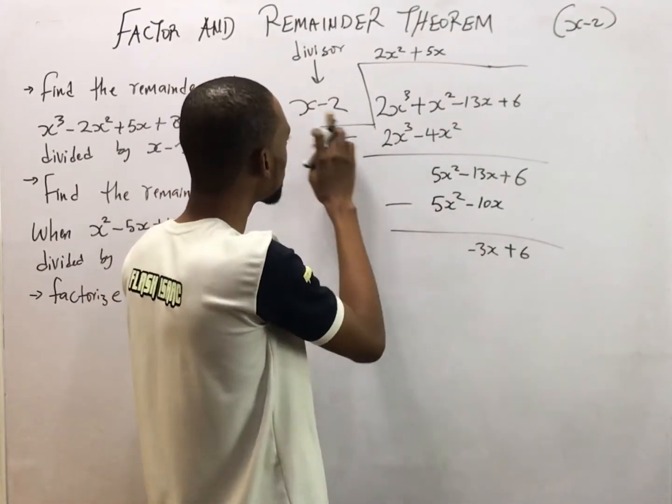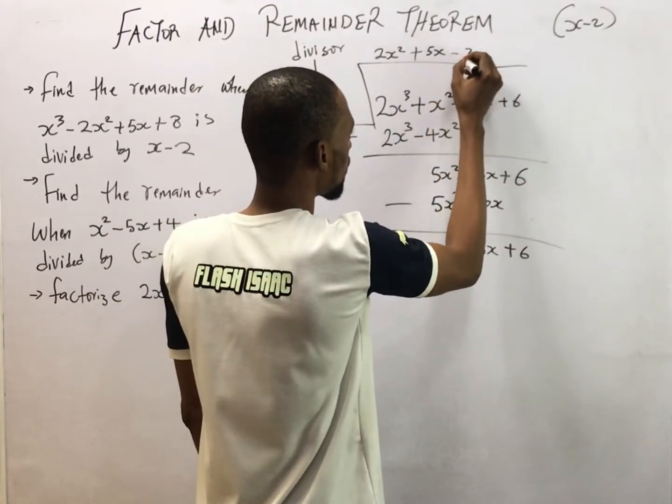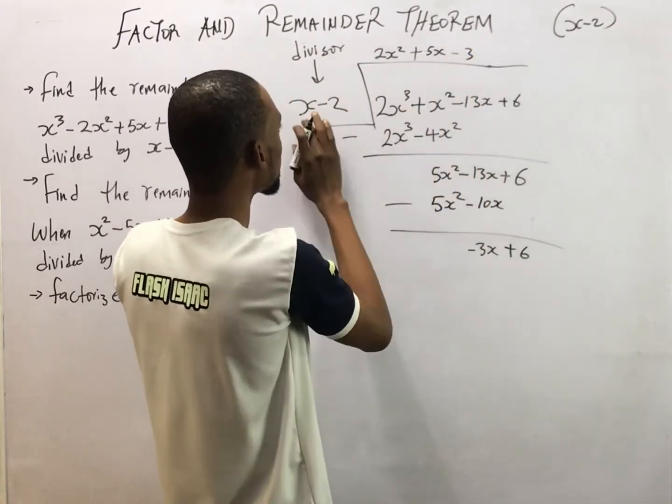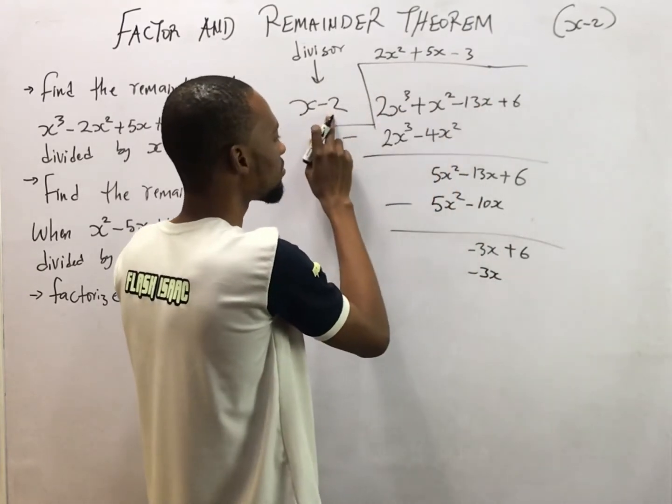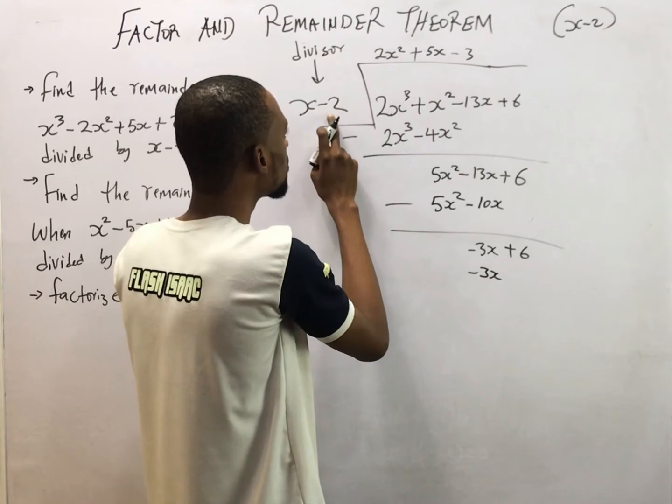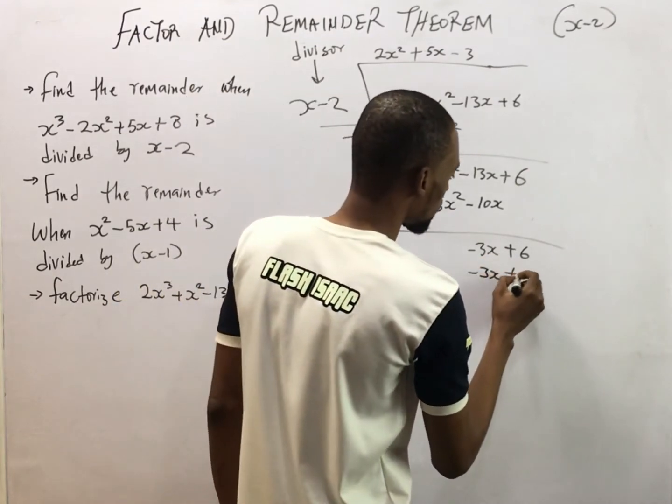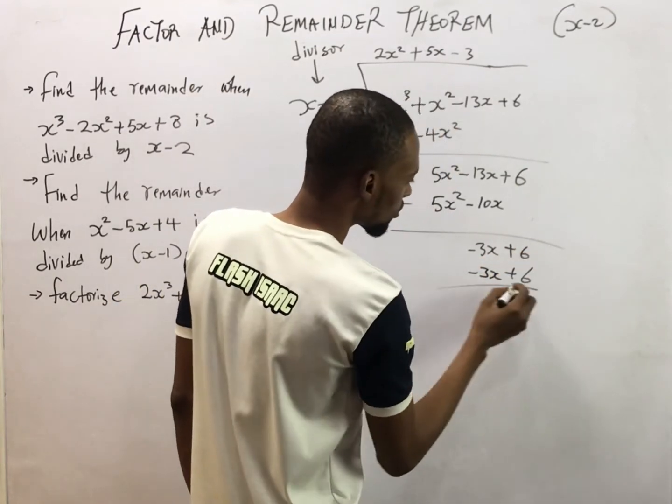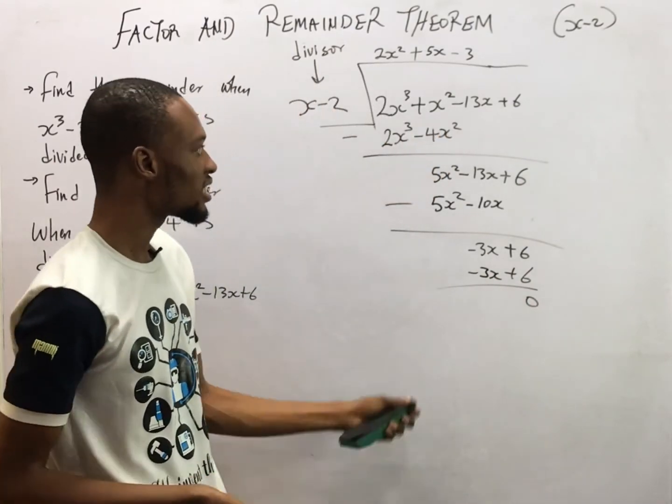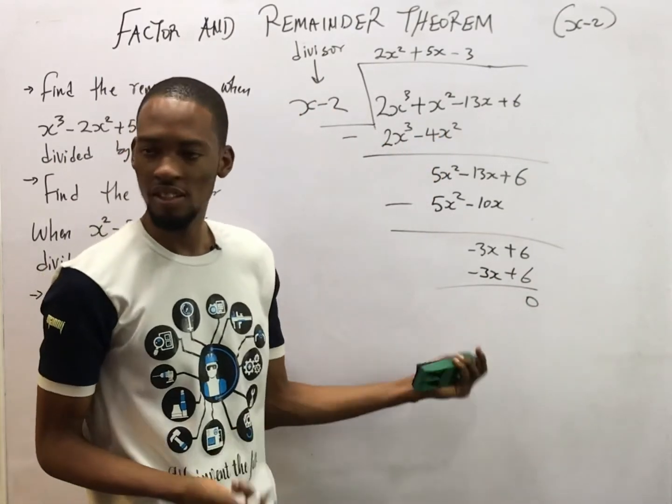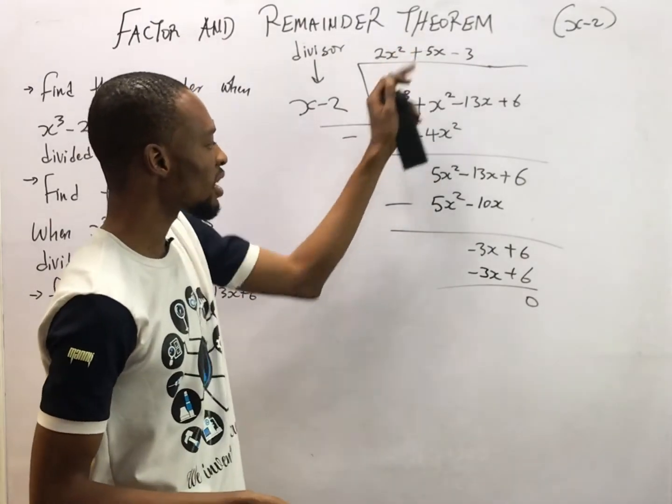Minus 3S divided by S would give you minus 3. So minus 3 times S is minus 3S. Minus 3 times minus 2 would give you plus 6. So 6 minus 6 is 0. This minus this is 0. So you look at it. So the remainder is still 0. So that is our quotient.